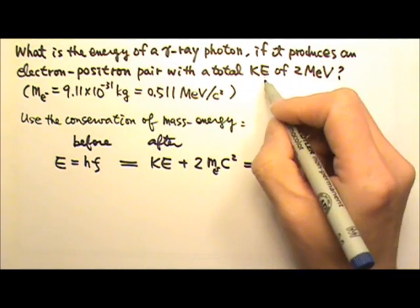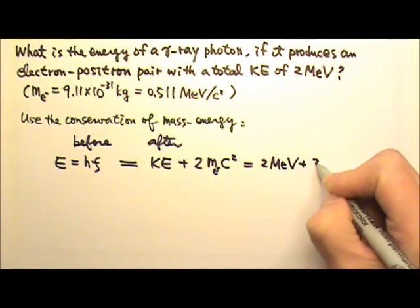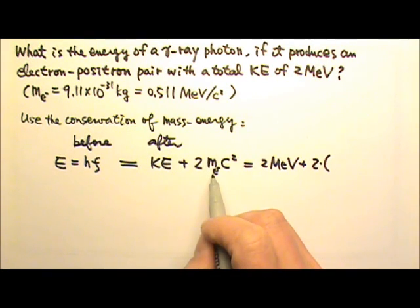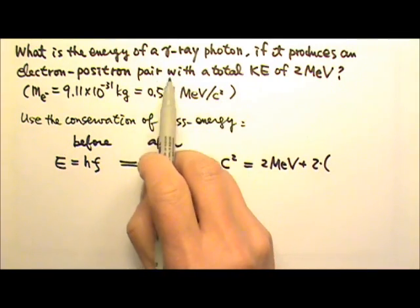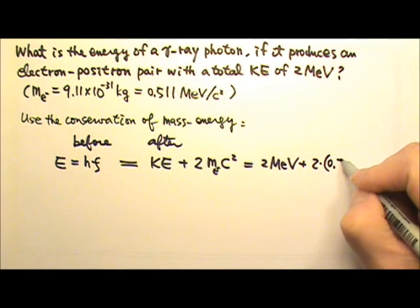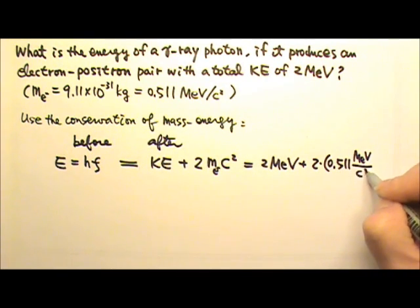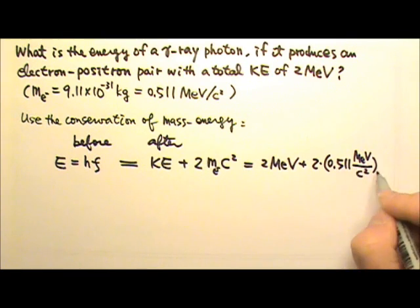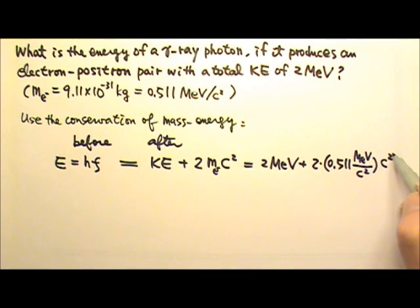So this will be the kinetic energy 2 MeV plus 2 times the mass of the electron. Because this is in MeV, that means it will be more convenient for us to use that mass. So that is 0.511 MeV over c squared.